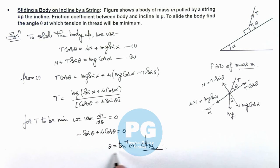The angle at which dT by dθ is getting zero, so here the value of tension will be minimum. Or you can further differentiate this expression and substitute θ is tan inverse of μ, so that will give you